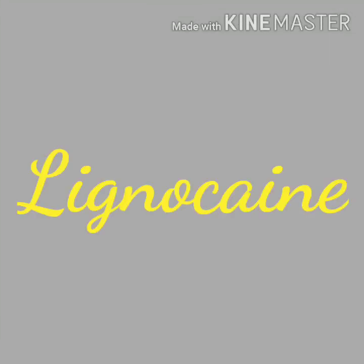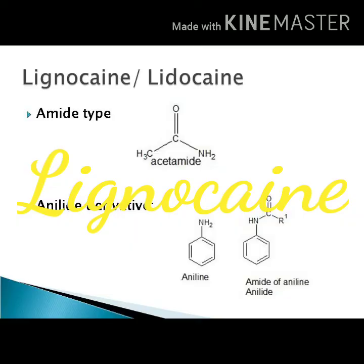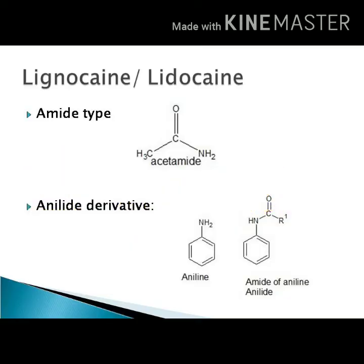The next local anesthetic agent we will see is lignocaine. As seen in the classification, lignocaine is an amide-type or anilide-type local anesthetic. An amide is formed by the reaction between a carboxylic acid and an amine (R-C=O-NH2). If the amine is aniline (C6H5-NH2), the corresponding amide is known as an anilide — so lignocaine is an anilide derivative.